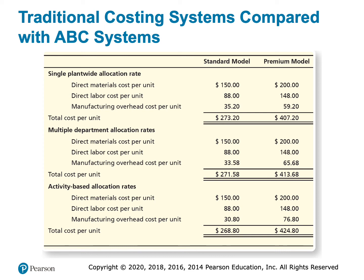For the premium model, I originally thought it would cost about $407. After adding two departments it looked closer to $414, and now with activity-based costing it's really closer to $425. By allocating based on activities, I find out I was under-costing the premium model by about $18 per unit, which is a pretty significant amount. For the standard model, I originally thought it was about $273, then $271.50, and now it's closer to $268.80. So I was over-costing the standard model by about $4 and under-costing the premium model by about $18.